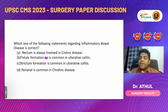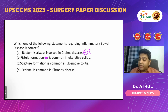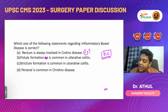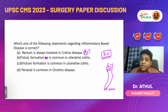Looking at option A: rectum is always involved in Crohn's disease — is it true? Basically, rectum is not always involved in Crohn's disease; that applies to ulcerative colitis. In ulcerative colitis, symptoms start from the anus and go proximally in a continuous fashion, and in almost all cases the rectum is involved, which is why bloody diarrhea is a very common symptom. In Crohn's disease, only around 50% of cases have rectal involvement — others have rectal sparing. So option A is wrong.